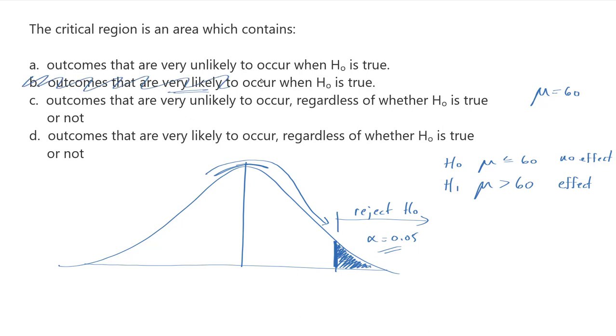So I can rule out B and I think I can also rule out D. It also talks about very likely to occur, but it's only very likely to occur if I expect that whatever my null hypothesis says, that my untreated population mean is the true mean.